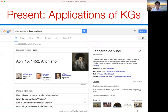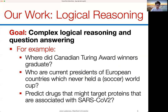What we would like to do with knowledge graphs is much more — not just locating an entity and displaying relationships, but doing much more complex logical reasoning and question answering. Imagine we want to ask: where did Canadian Turing Award winners graduate? We need to identify Canadians who are Turing Award winners, understand who has both properties, and then figure out where these people graduated.